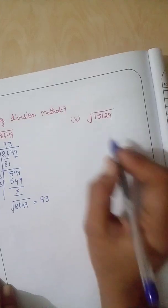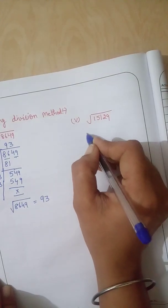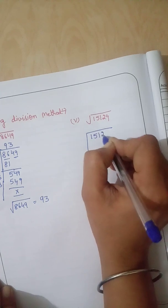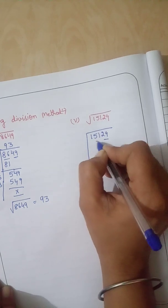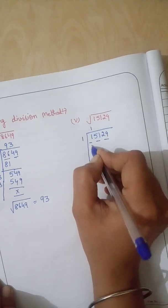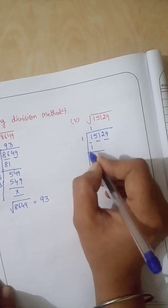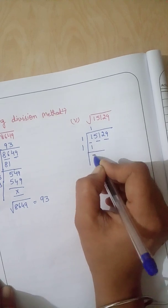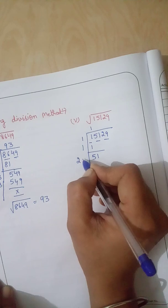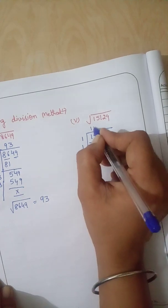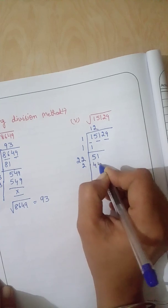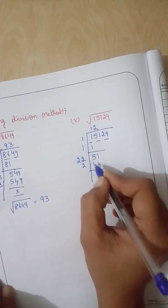Now, fifth part. Find square root of 15,129. Again, we make the pairs. Here is 1. 1 minus 1 is 0. We write a full pair, 51. 1 plus 1 is 2. 2 times 2 is 4. It is divisible by 2. 22 into 2 is 44. 11 minus 4 is 7. 4 minus 4 is 0.